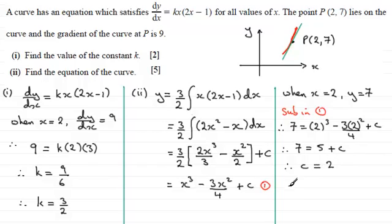And to wind this up, we'll just substitute the value of c back into equation 1. And that gives us our final answer that therefore, y equals x³ minus 3x²/4, and then plus c, which is now 2.